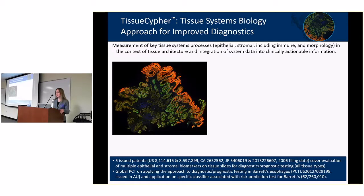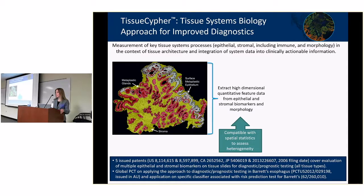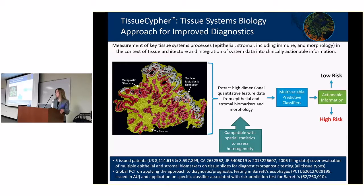Tissue Cipher integrates measurement of key stromal processes with epithelial abnormalities in the context of tissue architecture. Our approach involves labeling multiple biomarkers per slide using multiplexed immunofluorescence, with critical selection of not just epithelial biomarkers but also stromal biomarkers and morphology. We use whole-slide fluorescence imaging to produce whole-slide scans, and we've developed image analysis software to make high-dimensional quantitative feature measurements on biopsies. We have multiple issued patents on this approach of combined measurement of epithelial and stromal biomarkers.